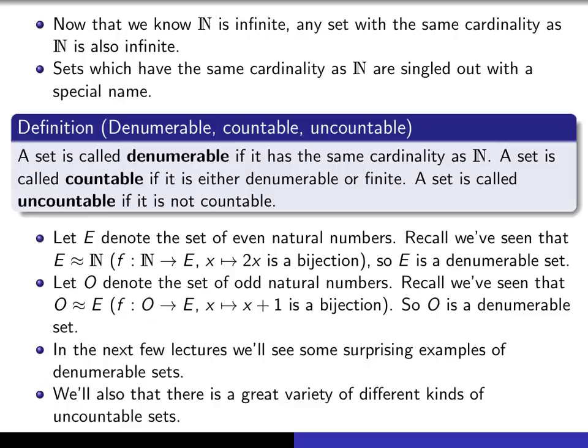But we'll also see that there's a great variety of different kinds of infinite sets. We'll see that there are lots of different kinds of uncountable sets, sets which are not denumerable. And among the set of uncountable sets, we'll see that there are lots of different kinds of uncountable sets. In other words, there's always a kind of uncountable set which is bigger than any given kind of uncountable set.